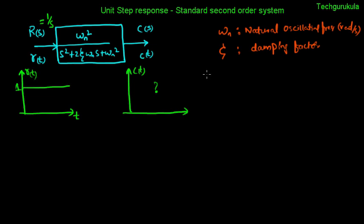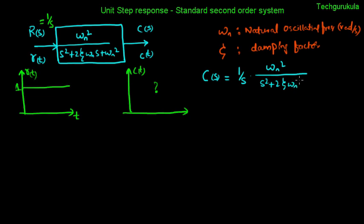The easiest quantity to find is c(s). c(s) is given by r(s) times the transfer function of the system: r(s) = 1/s multiplied by omega_n squared over s squared plus 2 zeta omega_n s plus omega_n squared. All we need to do is take the inverse Laplace of c(s) to get c(t).